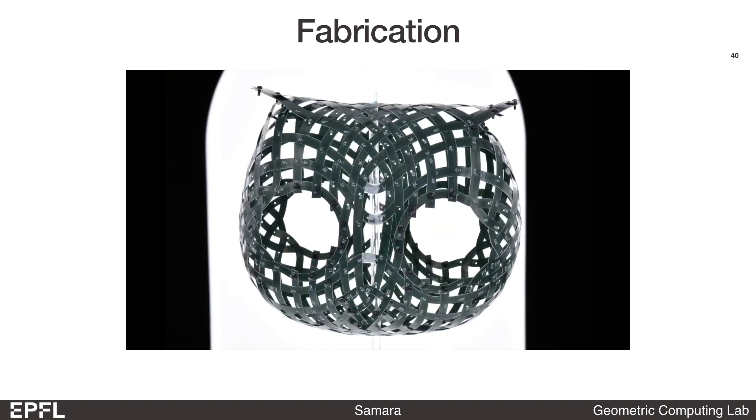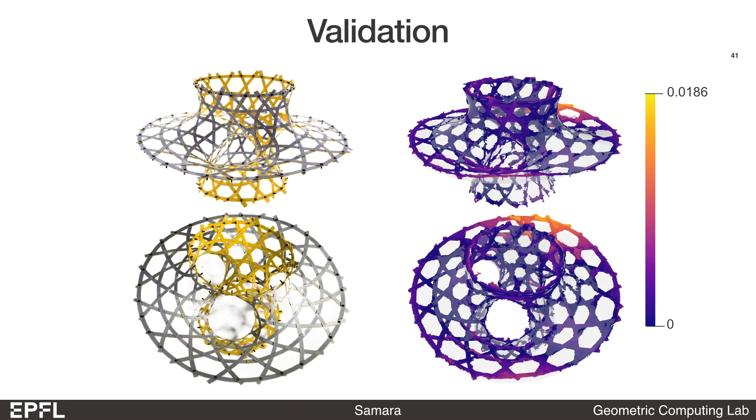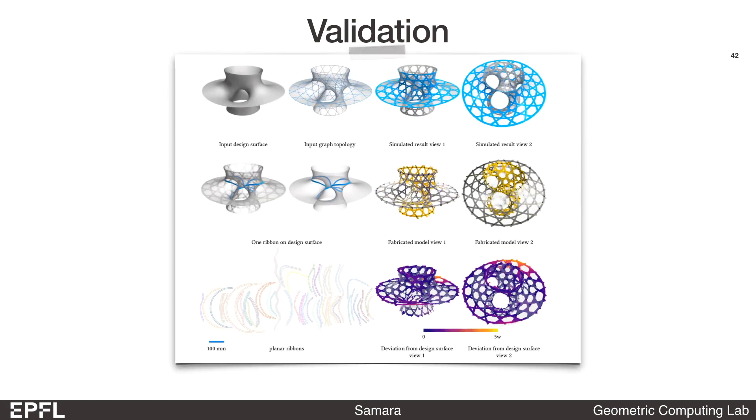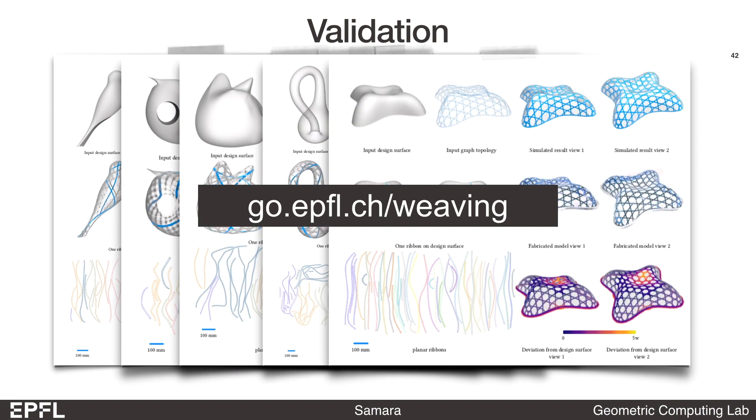Once the weaving is done, we only need pins at the boundary crossings. In order to systematically evaluate the accuracy of our inverse design method, we scanned and reconstructed all the models we fabricated. For this model, the maximum deviation from the target surface is less than 2% of the bounding box diagonal. We provide the complete set of quantitative comparisons in the supplementary materials for all the models we fabricated. We also included the vector files for the ribbon patterns, and we invite you to weave these models yourself.